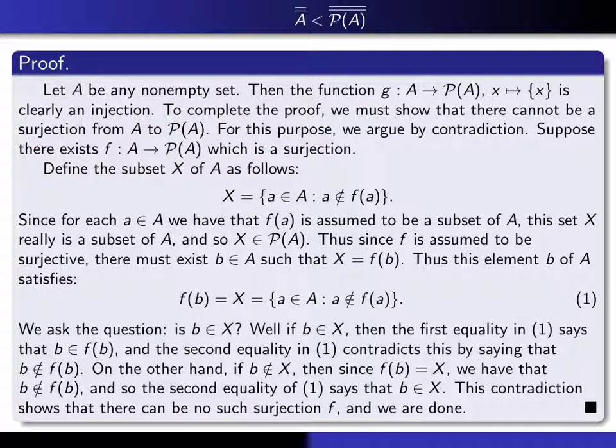So that means b is not an element of X, but on the other hand, if b is not an element of X, well, since f of b is equal to X, that means that b is not an element of f of b. But if b is not an element of f of b, then according to this, b must be an element of X. And that's a contradiction.